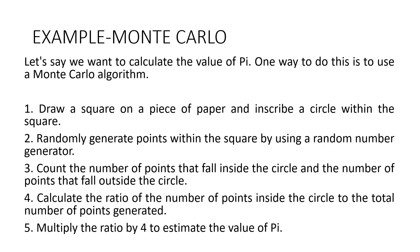Let's say that we want to calculate the value of pi. One way to do this is to use a Monte Carlo algorithm. Draw a square on a piece of paper and inscribe a circle within the square. Randomly generate points within the square by using a random number generator. Count the number of points that fall inside the circle and the number of points that fall outside the circle. Calculate the ratio of the number of points inside the circle to the total number of points generated. Multiply the ratio by 4 to estimate the value of pi.